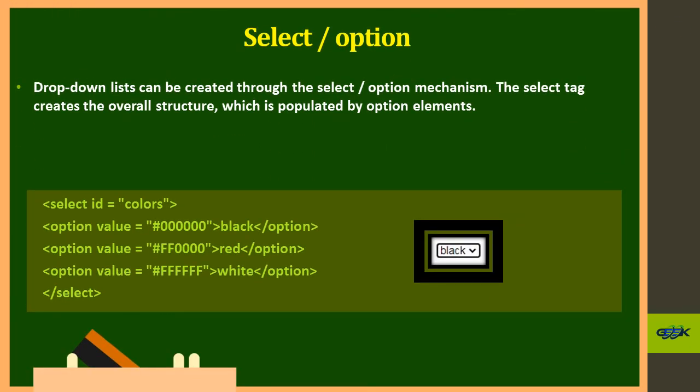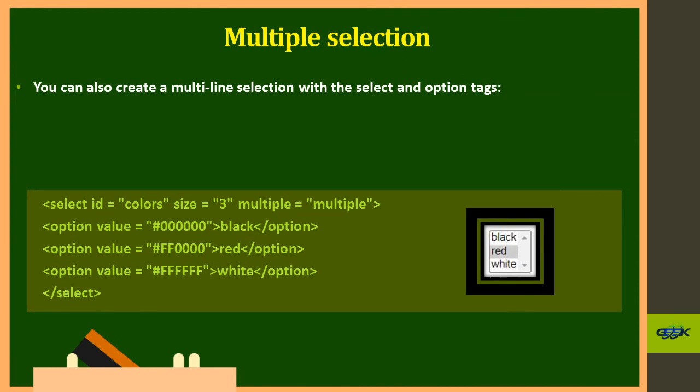The select and option tags create a dropdown box inside a form. One option is selected by default; clicking shows all options — in this case, Black, Red, and White. The value inside the value attribute is what gets processed when selected. Another approach uses a list-style group selection, showing all options at once rather than in a dropdown.